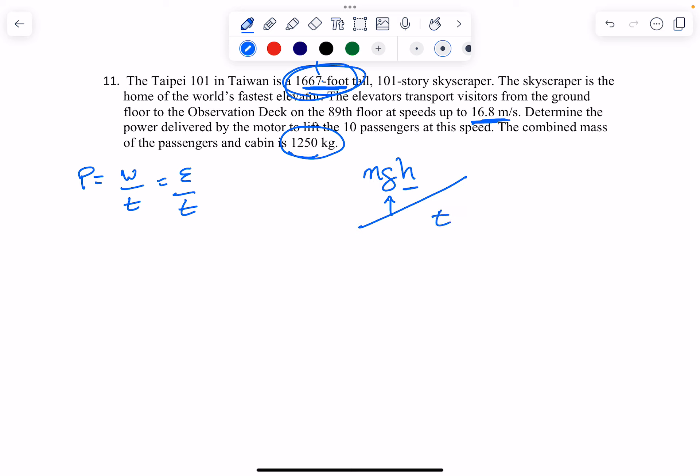Now, the time is a little bit weird. You're going to find the time - we know it travels at 16.8 meters per second, and we know the distance that it travels, and that's a constant speed. So you need to find the time. You're going to use kinematics equations.